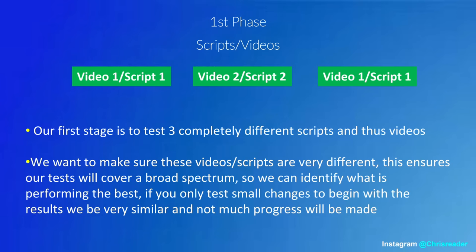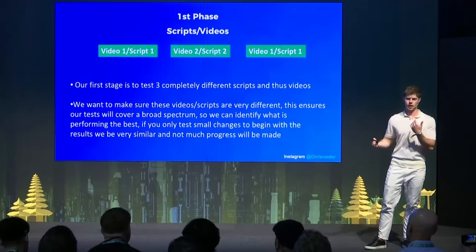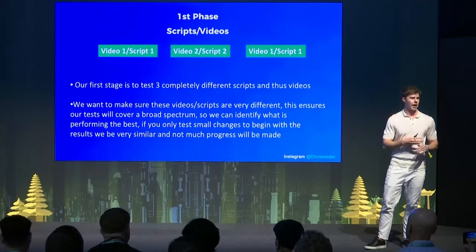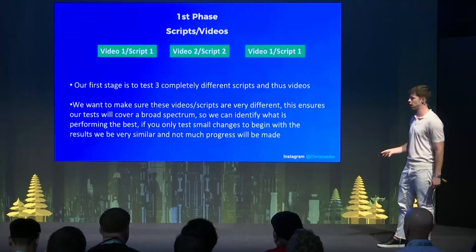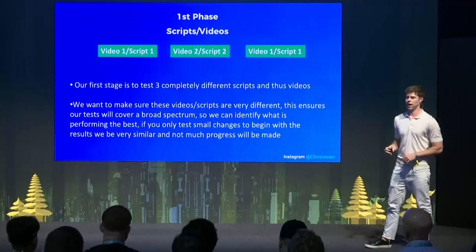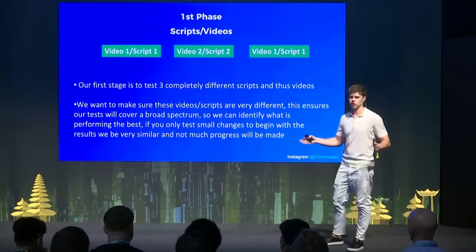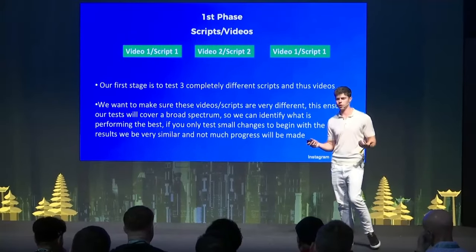I'm going to give you some visual examples of how I actually lay this out, because I basically write out what I'm going to do on a piece of paper or a Word document so I can see what I'm going to test and scale. The first phase is to test completely different videos and scripts — they need to be very different. That ensures we have an actual good test, because if you test videos that are just slightly tweaked, you won't get a good test.